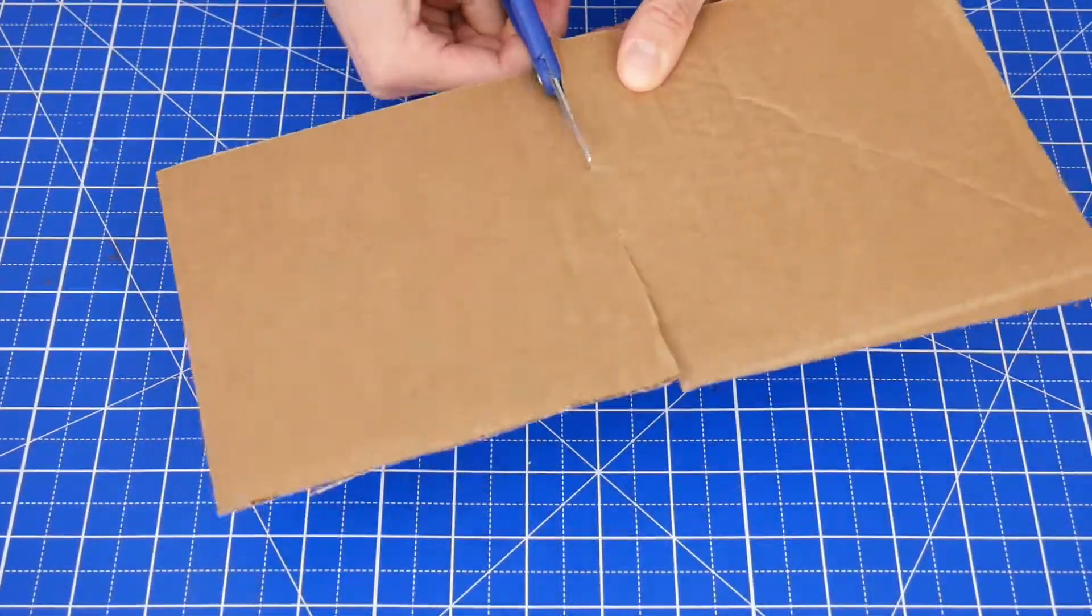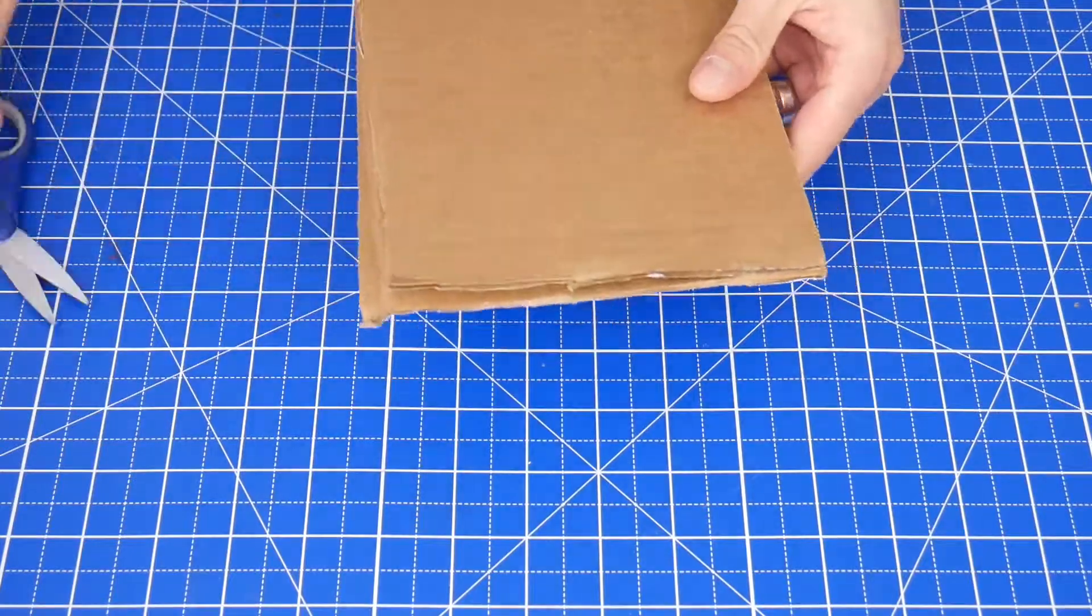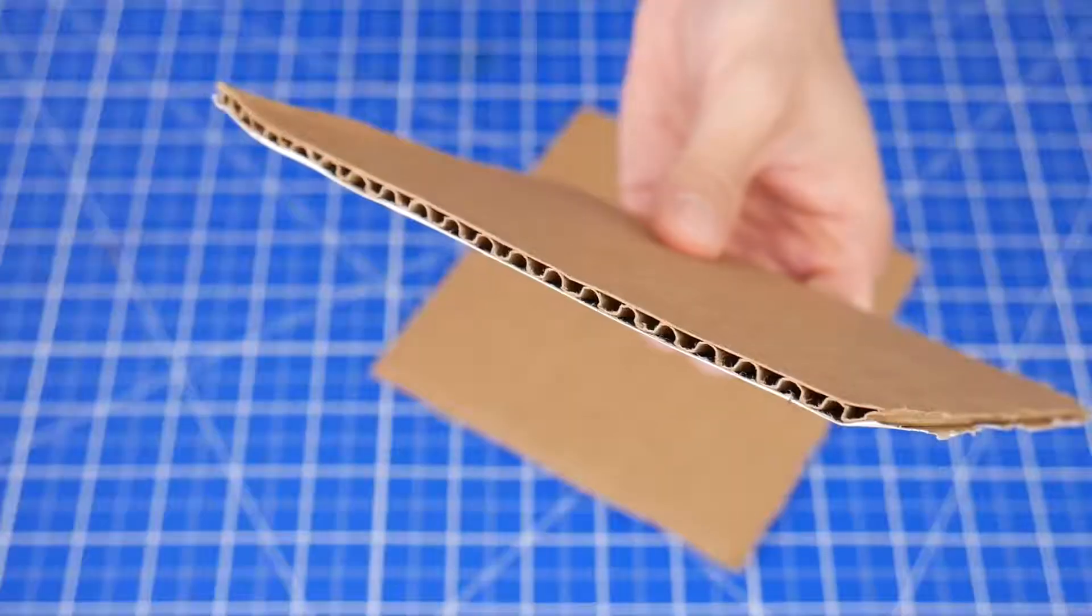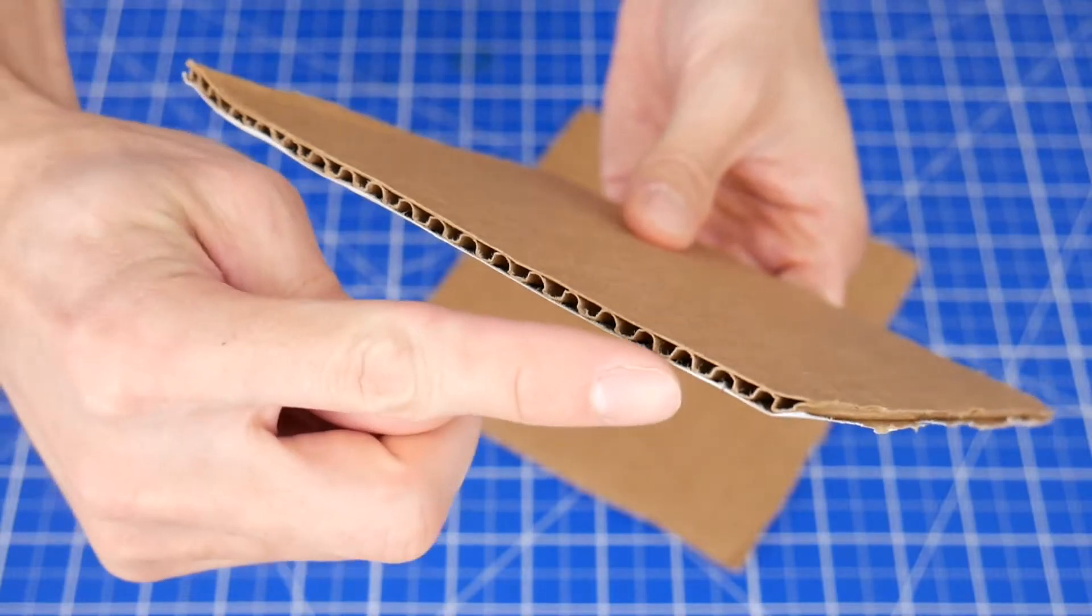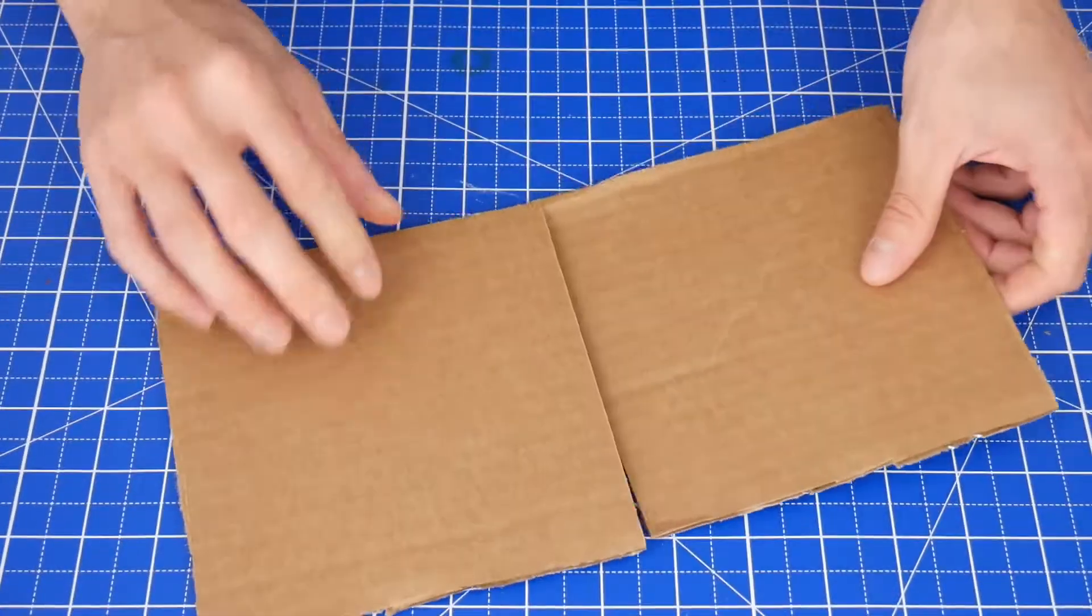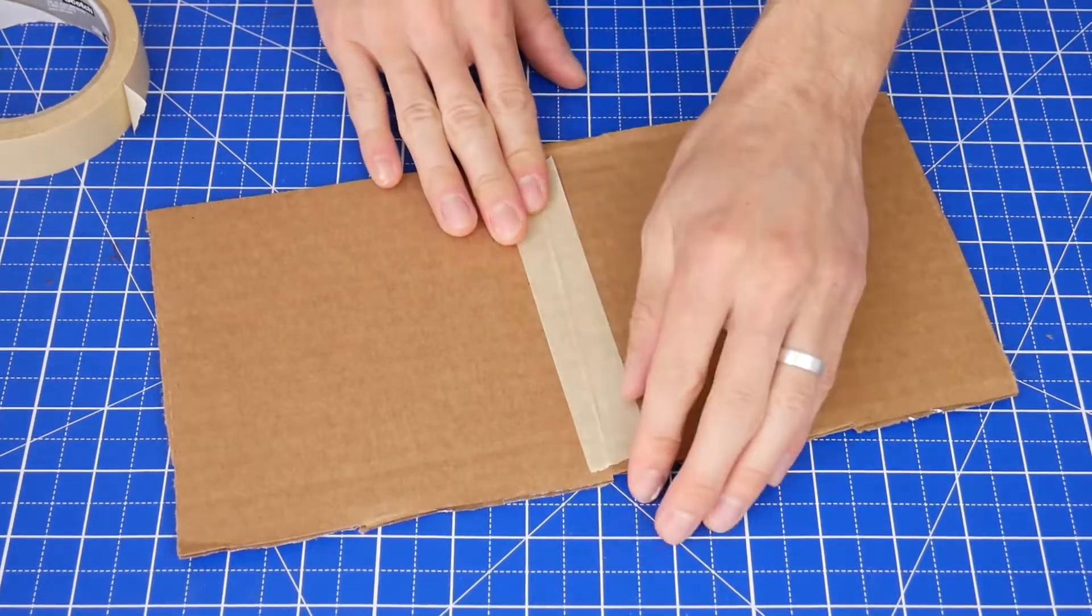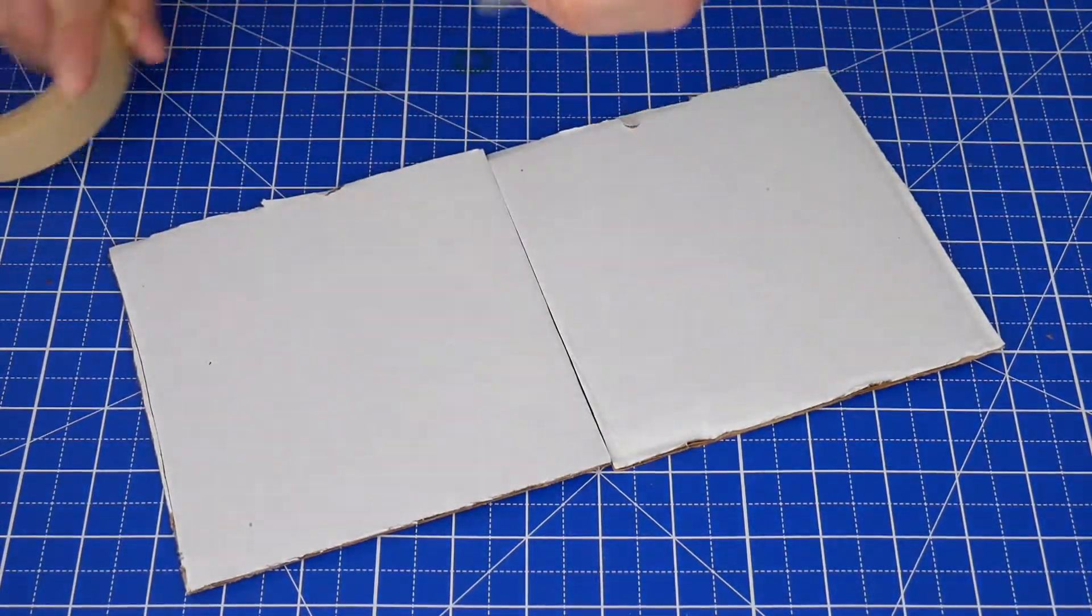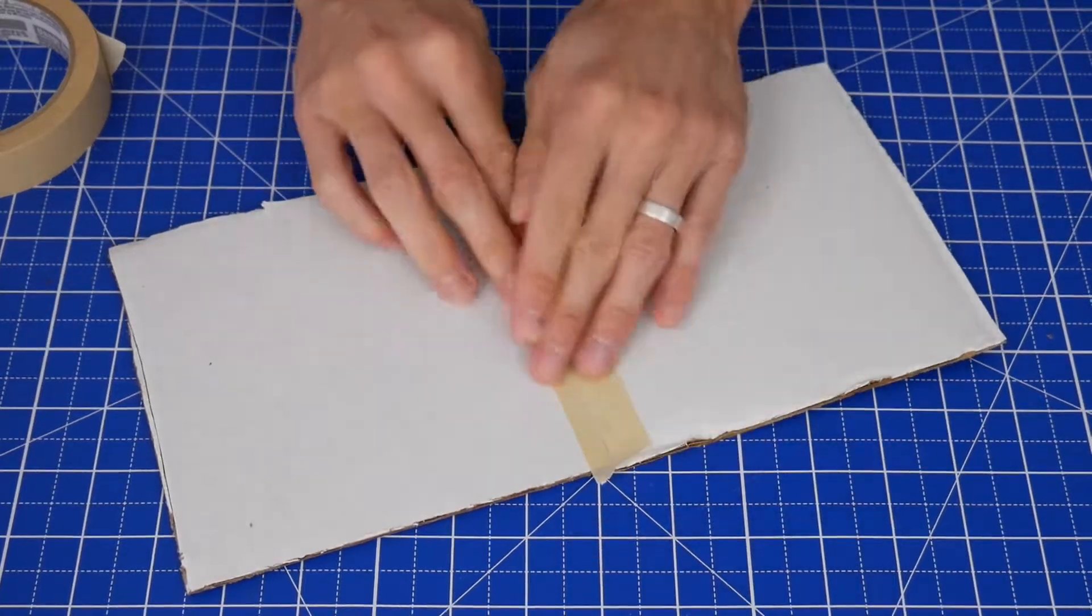First, cut the cardboard into two 5 inch by 5 inch squares. An adult might need to do this step. Then look at the cardboard and find the edges that have the open corrugations. Line up those edges and then tape it together on both sides. By lining up the corrugations, it'll help prevent the cardboard from bending where it shouldn't.